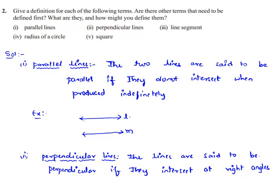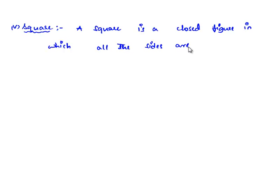And in the fifth part: the definition of a square. A square is a closed figure in which all the sides are equal, and the angle between any two adjacent sides is 90 degrees. Example: